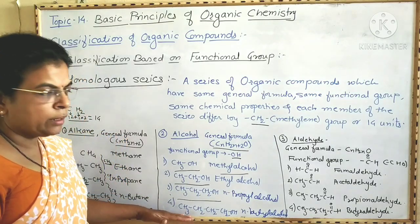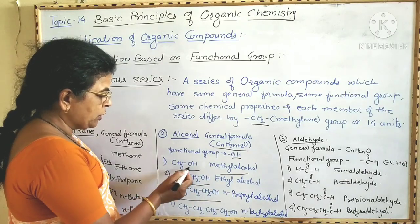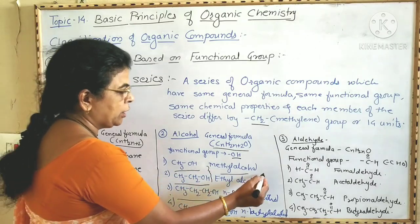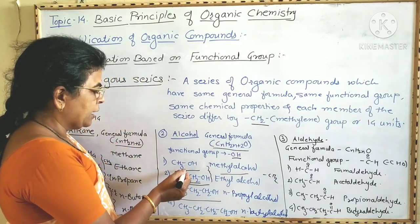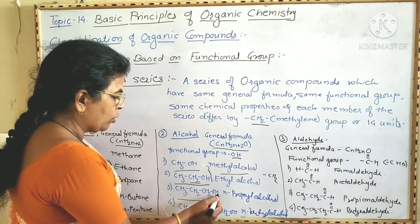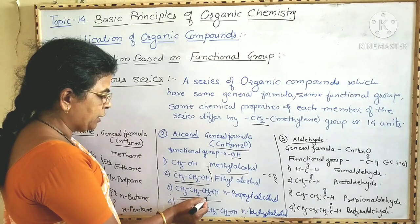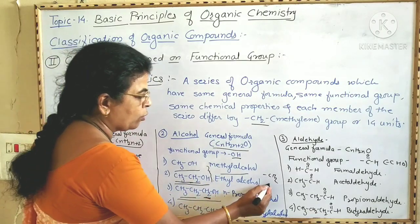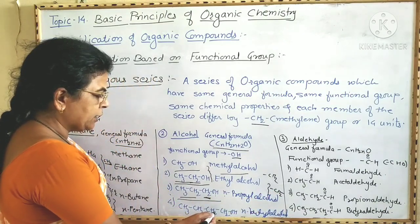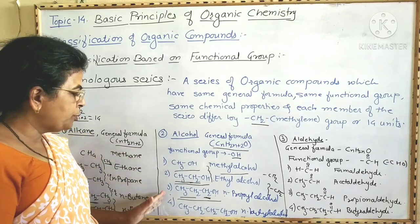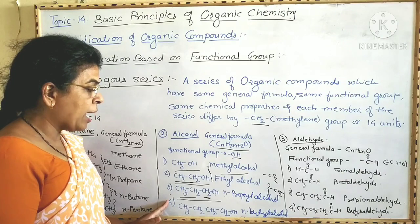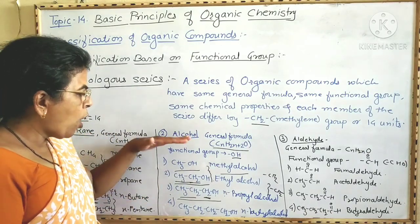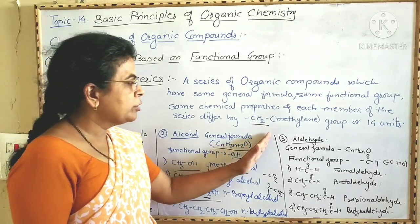Now comparing these four members: methyl alcohol and ethyl alcohol differ by one CH2 group. Ethyl alcohol and n-propyl alcohol also differ by a CH2 group — n-propyl alcohol has an extra CH2 compared to ethyl alcohol. Similarly, n-butyl alcohol differs from n-propyl alcohol by a CH2 group. That is, each successive member of the series differs by the methylene group (CH2) or by 14 mass units. All these alcohols have the same chemical properties.